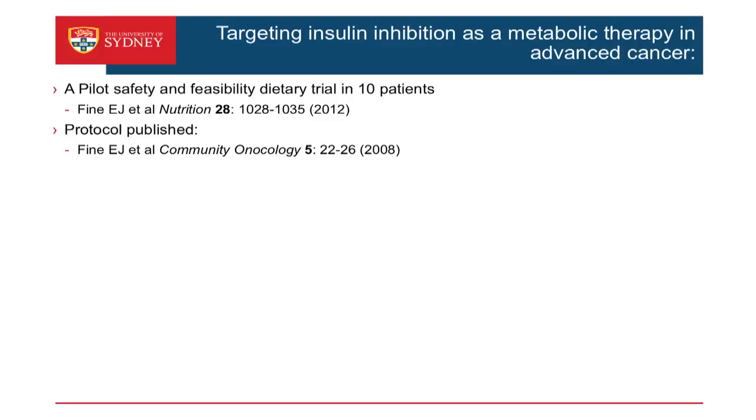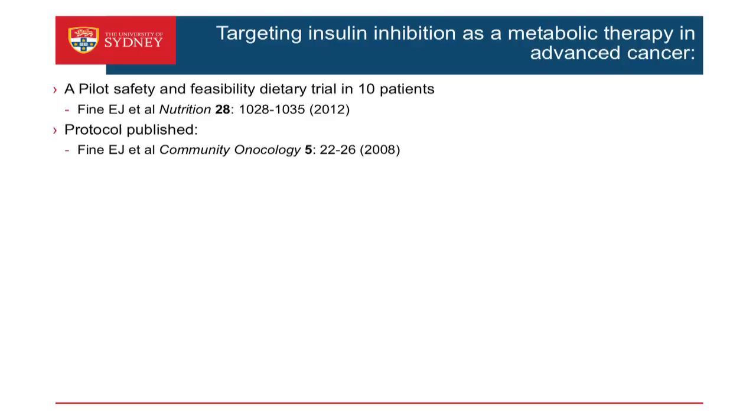In this study they had 10 patients and put them on a four-week prospective intervention. A few things to note: there are only 10 people, it is a small group, and it was a mix of cancers — a couple of breast cancers, one or two colorectal cancers, an esophageal, a fallopian, a lung, and an ovary. The results can't be extrapolated from one cancer type to all. That's why we need to be careful when we use case studies like these.